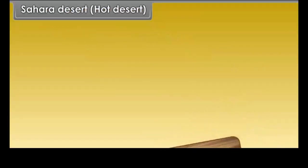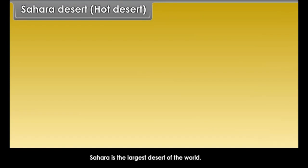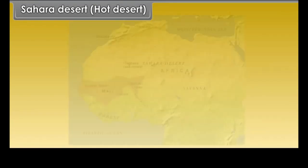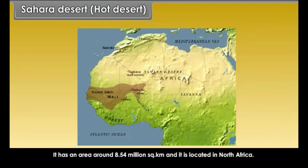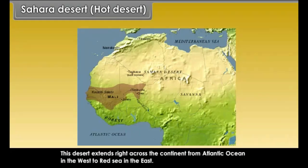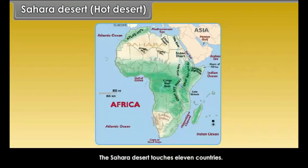Sahara Desert — Hot Desert. Sahara is the largest desert of the world. It has an area of around 8.54 million square kilometers and is located in North Africa. This desert extends right across the continent from the Atlantic Ocean in the west to the Red Sea in the east. The Sahara Desert touches 11 countries.